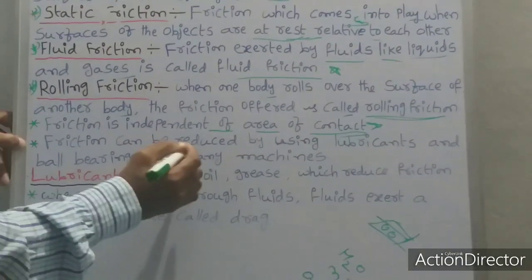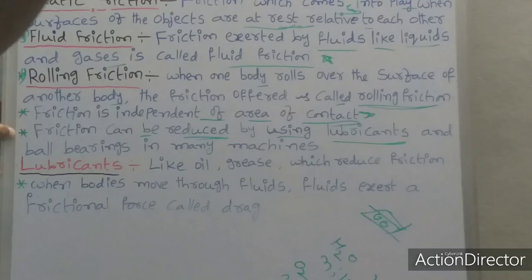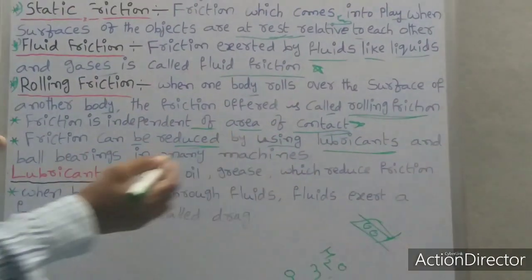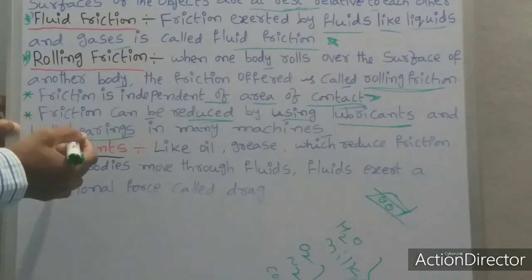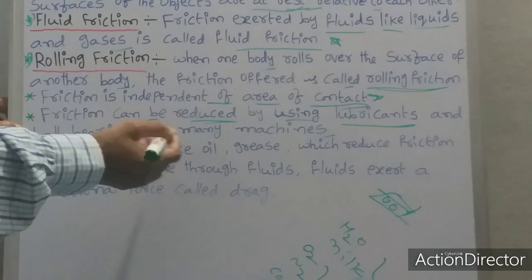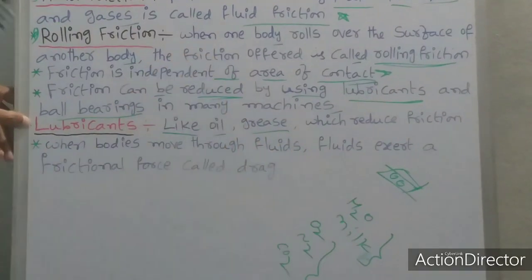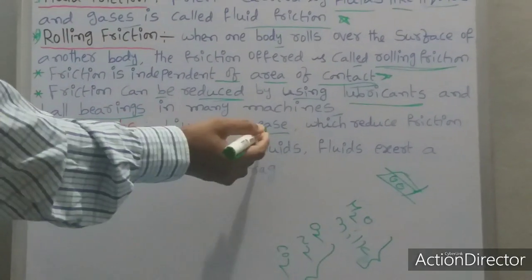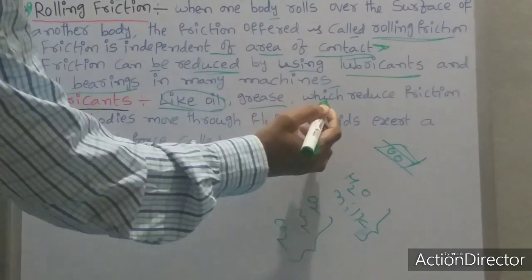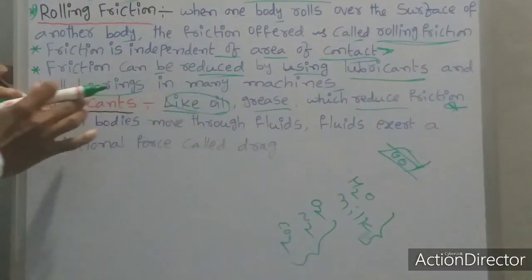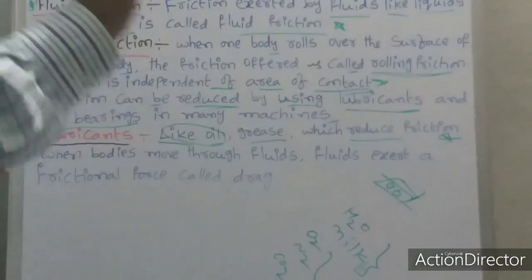Friction can be reduced by using lubricants and ball bearings in many machines. What are lubricants? Like oil, grease, coconut oil. Lubricants like oil and grease which reduce friction, that is most important.